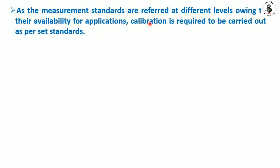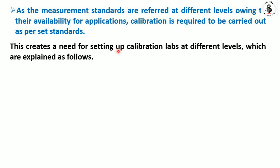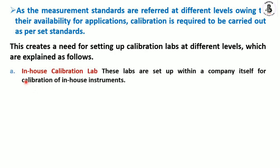As measurement standards are referred to at different levels owing to their availability for applications, calibration is required to be carried out as per set standards. This creates a need for setting up calibration labs at different levels, and in India there are a number of labs available for calibration. The first type is the in-house calibration lab — these labs are set up within the company itself, whether multinational or national, to continuously check quality. Each and every industry sets up a small calibration lab.